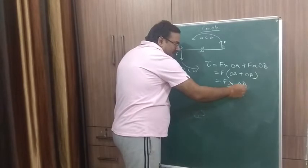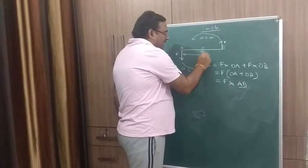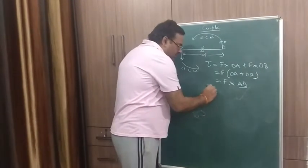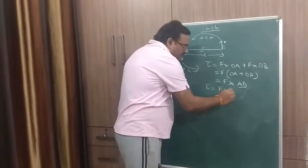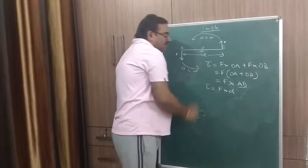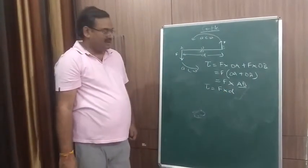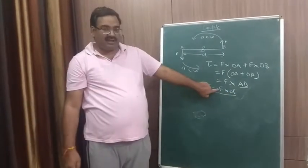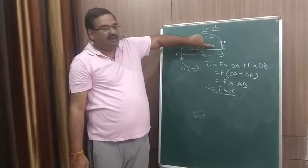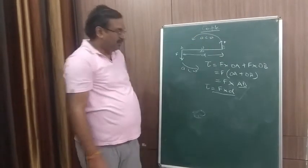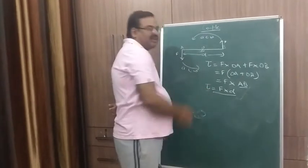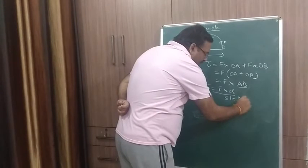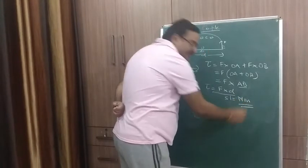And what is A,B? A,B is the distance between the two forces. Is it clear? So what is torque? Torque is equal to force into perpendicular distance or distance between the two parallel forces. So torque is F into D, either one of the forces and the distance between the two forces. Unit, again we look at the unit. Since it is torque, the unit remains the same. Unit is S-I unit is newton meter.